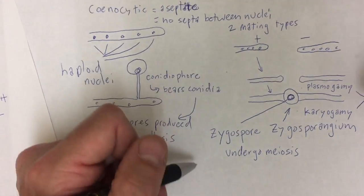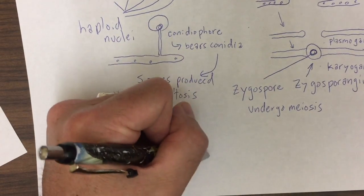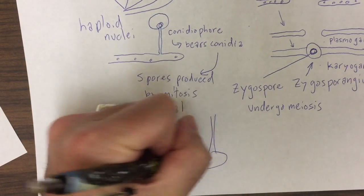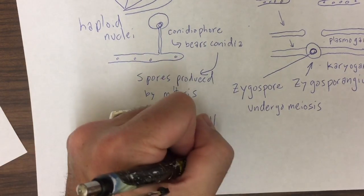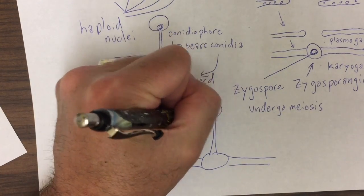Okay, so let's go down here and see what happens next. The zygospore, after it undergoes meiosis within the zygosporangium, may produce a new conidiafore,